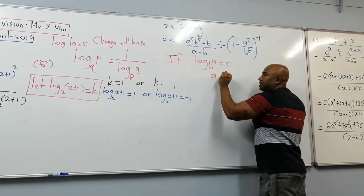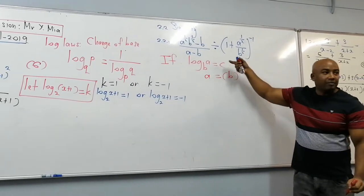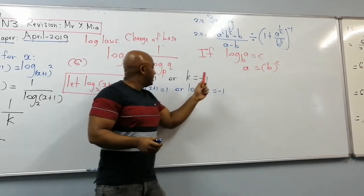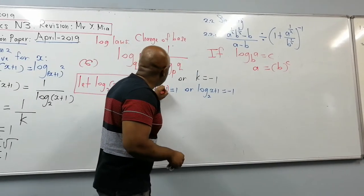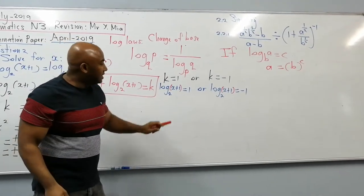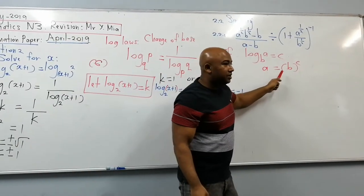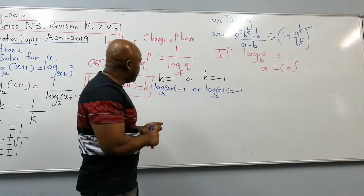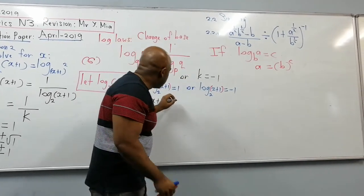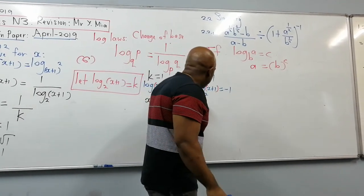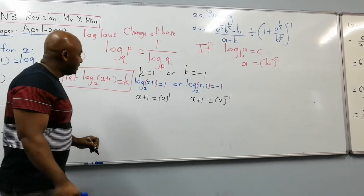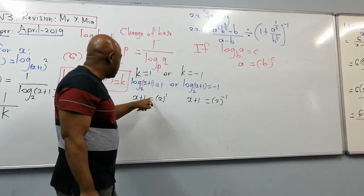Converting from log form to exponential form: a is x plus 1, b is 2, and c is 1. So x plus 1 equals 2 to the power 1, giving x equals 1. For the second case: x plus 1 equals 2 to the power minus 1, which is 1 over 2. So x equals 1 over 2 minus 1, which is 1 over 2 minus 2 over 2, giving x equals minus 1 over 2.